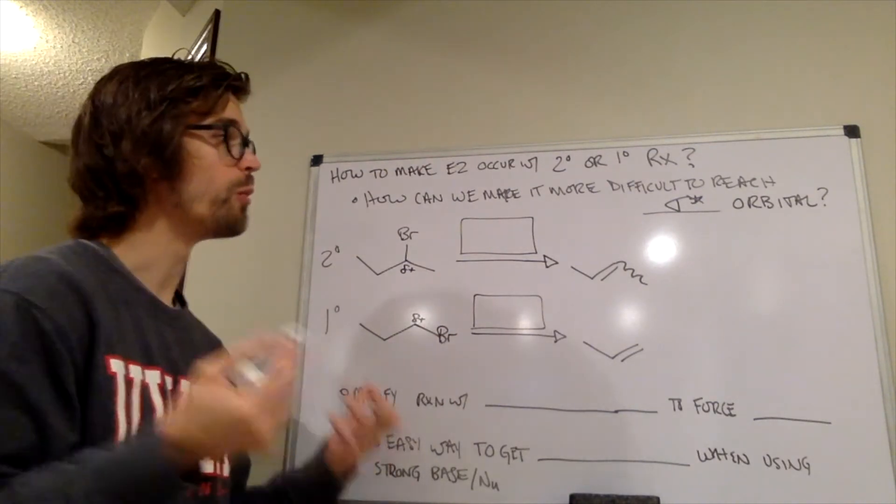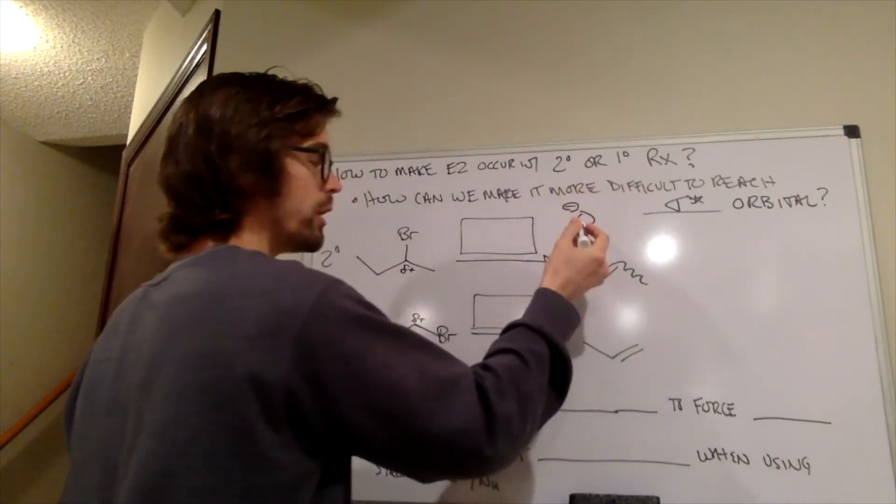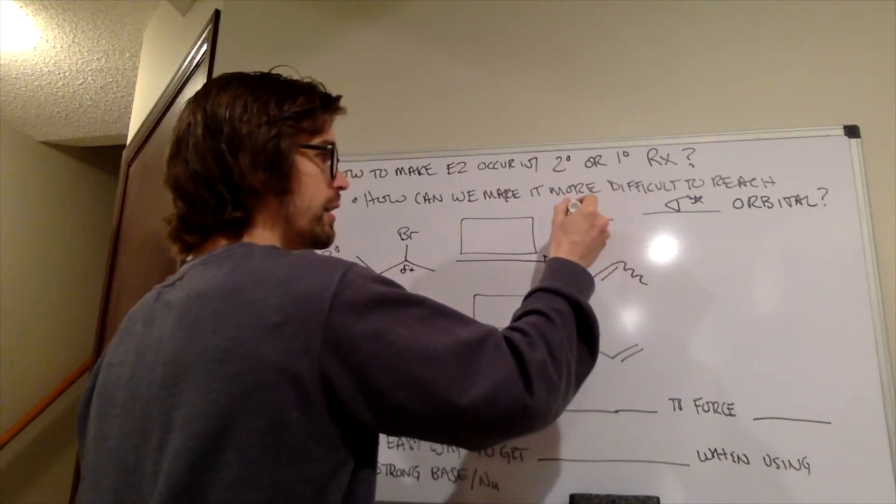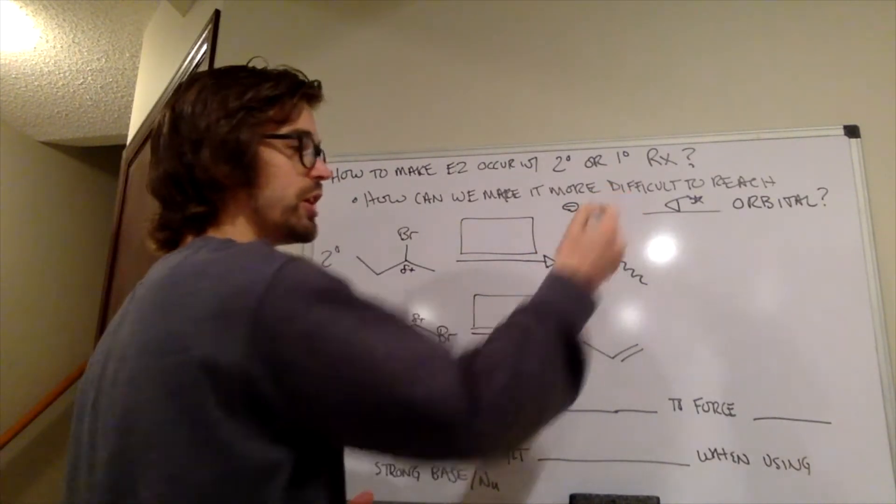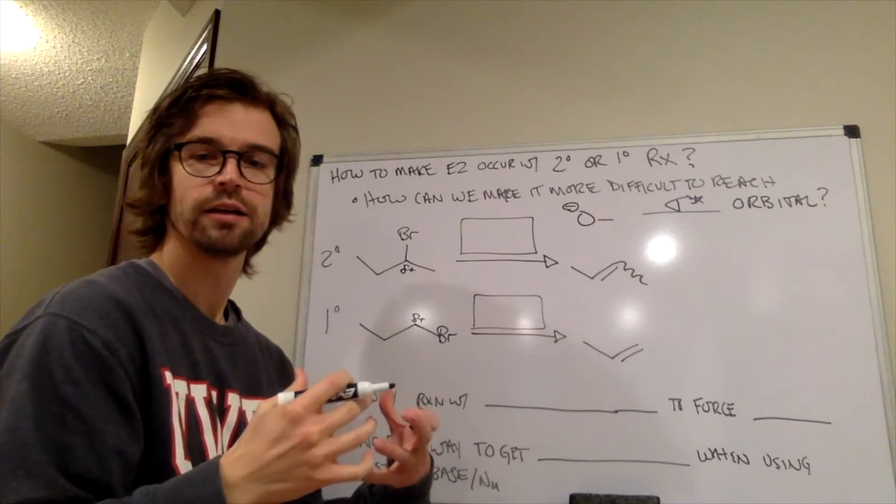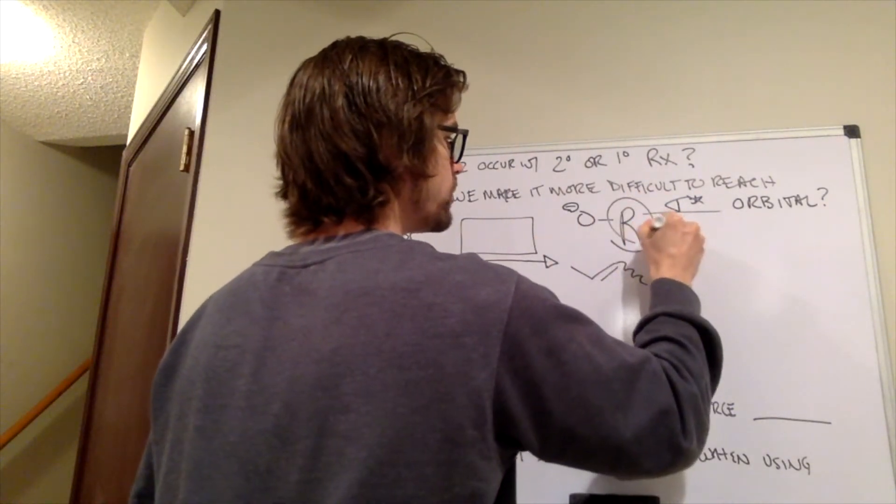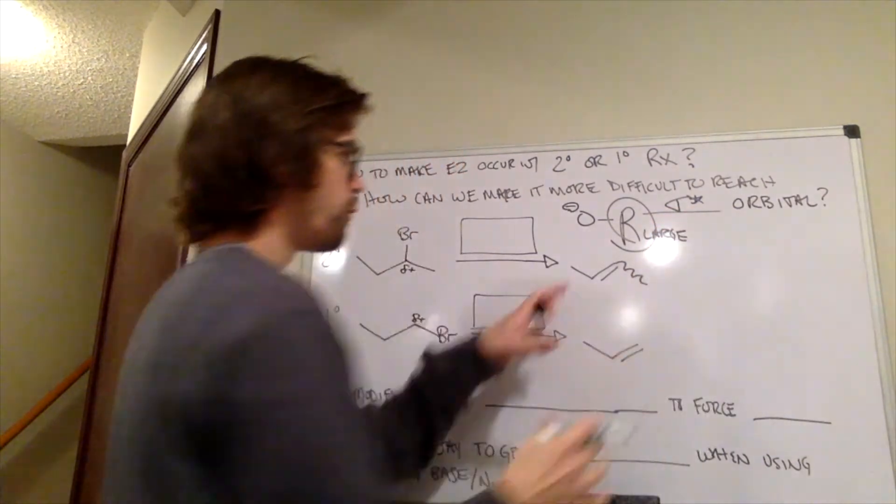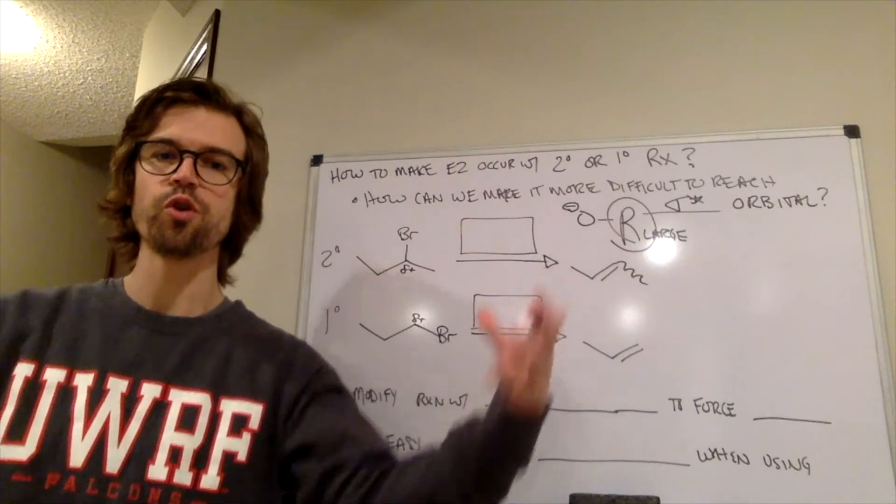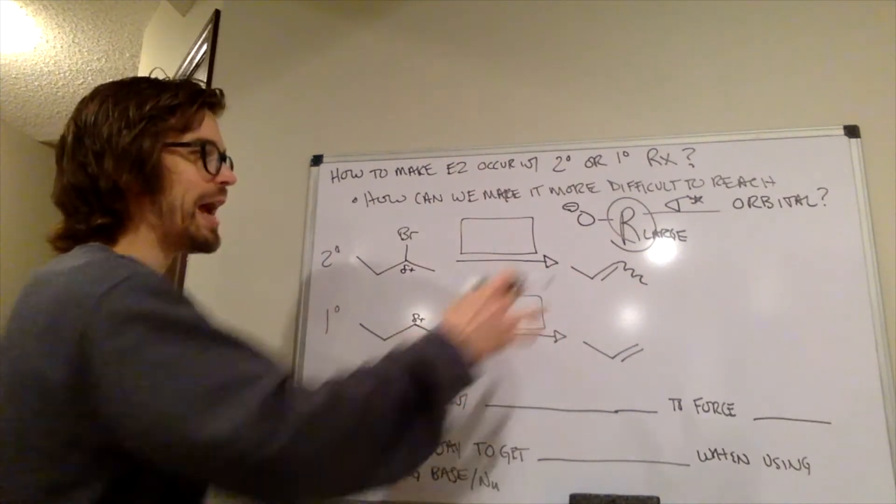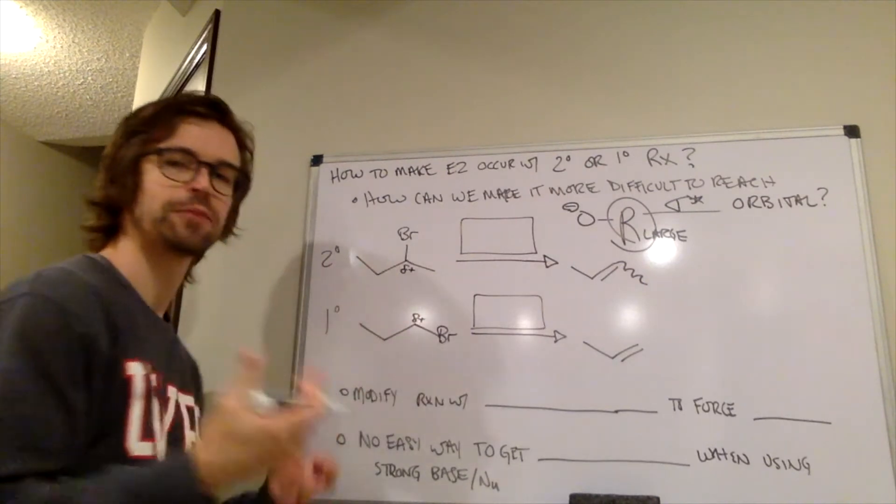And essentially, what we need to do is combine that strong basic moiety, and in that last page that we talked about, we always had an H here that's really small. But what if we had something that was huge? So we'll just say R large, and we'll just write large here too. If we had the oxygen, and that oxygen was attached to a huge group, that would make it really challenging for that molecule to reach that sigma star orbital.